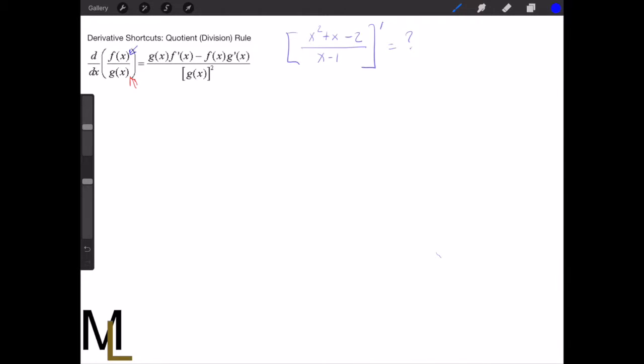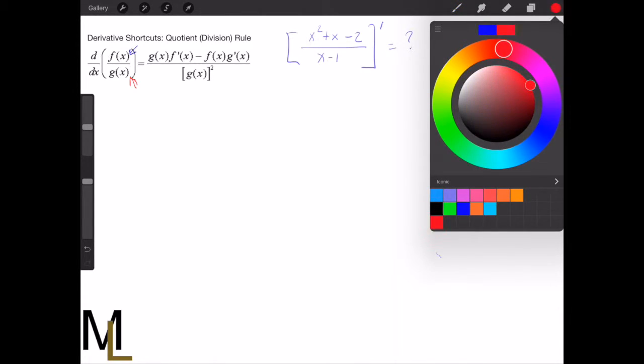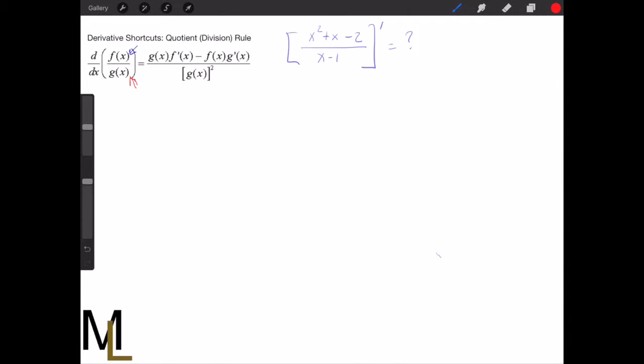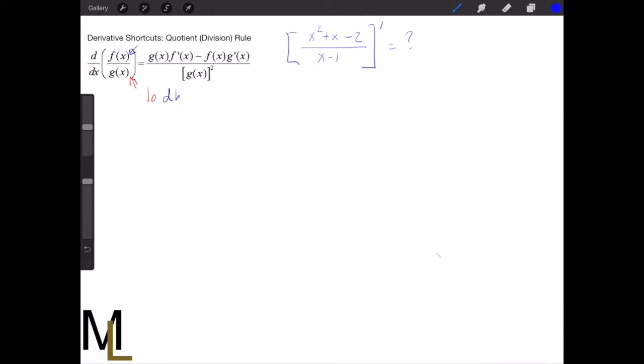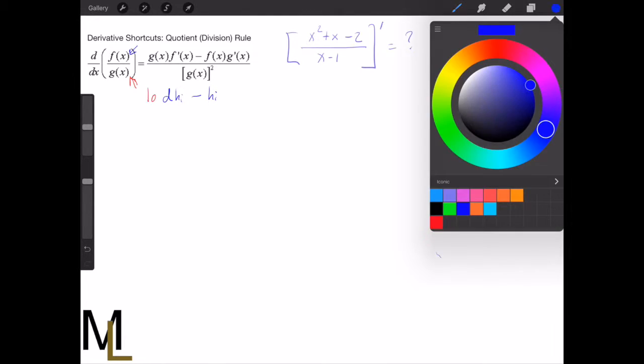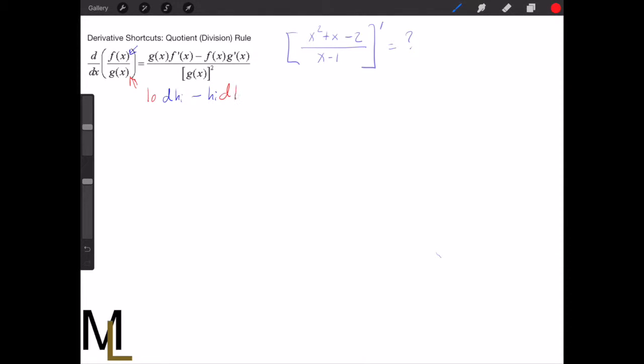So you say, assume that the g of x is low because it's on the low side of the fraction, and the f of x is high because it's on the high side of the fraction. So what you say is you say low d high, and you say d because it's a derivative, minus high d low all over low low because it's the low g of x squared.